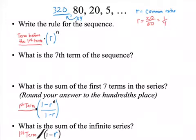So my rule is going to be the term before my first term, which is 320, my R, which is 1 4th, to the N. And I'm done.